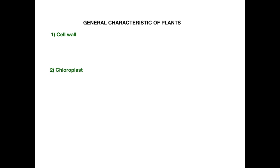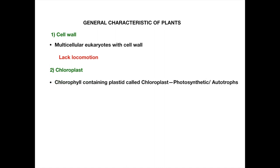Due to the presence of a cell wall, the plant cell is rigid and hard, and that is why plants usually lack locomotion. Due to the presence of chloroplasts, plants can manufacture their own food through photosynthesis — that is why plants are called autotrophs. 'Auto' means self and 'troph' means manufacturing or synthesis.